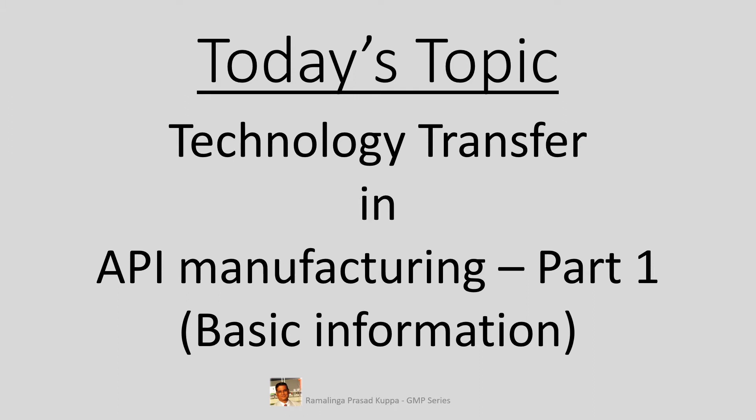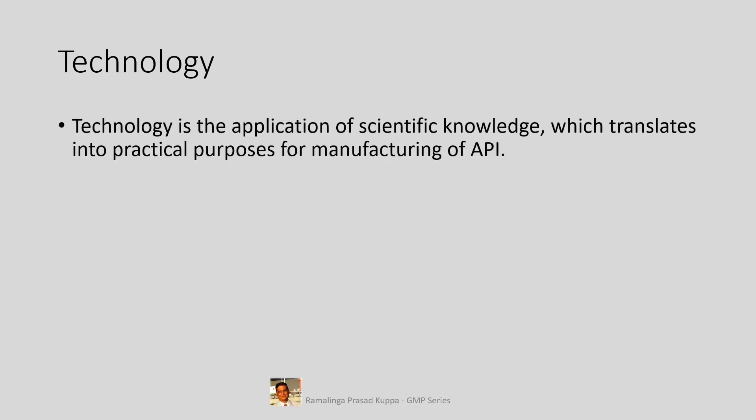In coming up video training programs, some more important information will be shared. Let us understand what technology is. Technology is the application of scientific knowledge which translates into practical purposes for manufacturing of API. By definition, technology is the application of scientific knowledge for practical purposes — we restrict this word only with reference to manufacturing of APIs. This may be used as a base for drug products too; however, additional information may have to be incorporated.